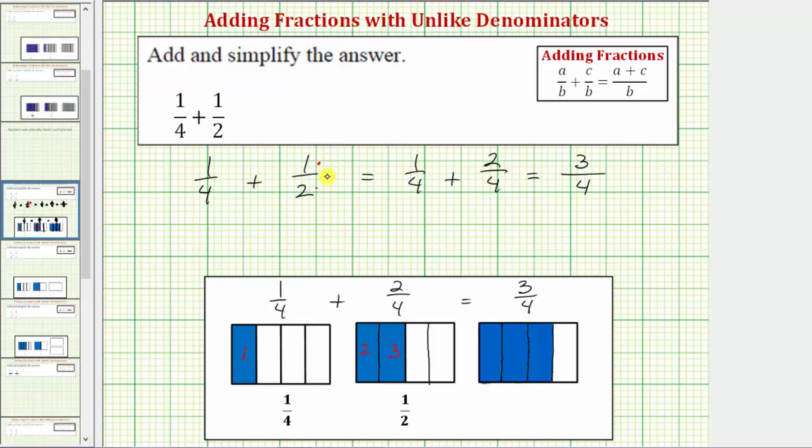So going back to the original sum of 1 fourth plus 1 half, if we're ever not able to determine the least common denominator, any common denominator will work. To find a common denominator, we can always just multiply the denominators together. 4 times 2 is equal to 8, so we could use 8 as a common denominator.